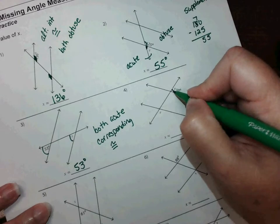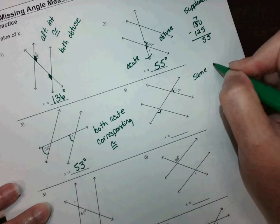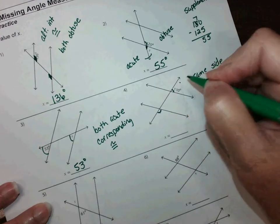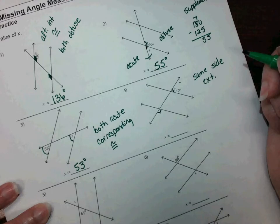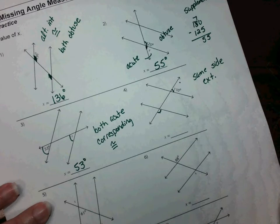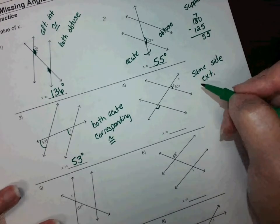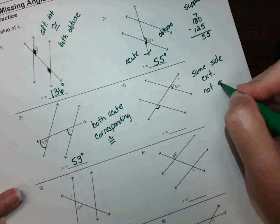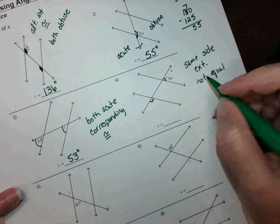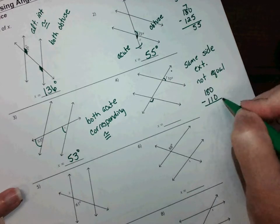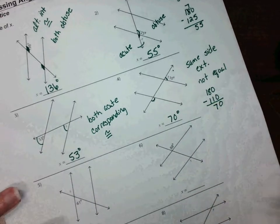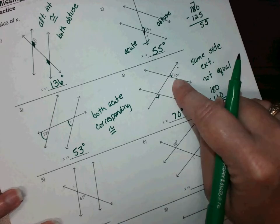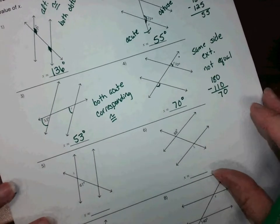They want me to do this one and this one — this is same-side exterior. I see this one's acute and this one's obtuse. They've got that labeled wrong; this should be 110. One is obtuse and one is acute, so they're not equal. I'm going to do supplementary: 180 minus 110 equals 70 degrees. Sometimes they don't draw angles to scale, so I'm going by what they have labeled.